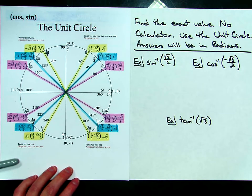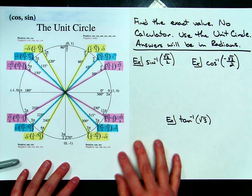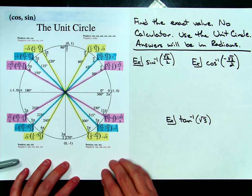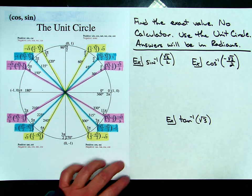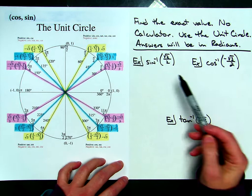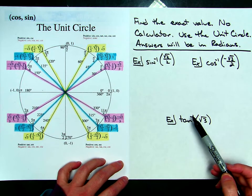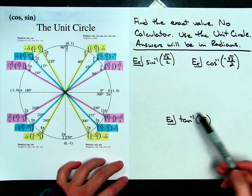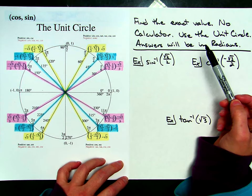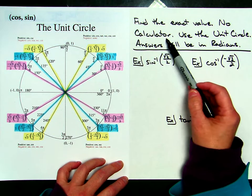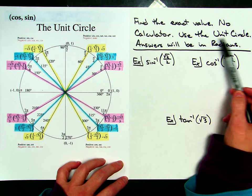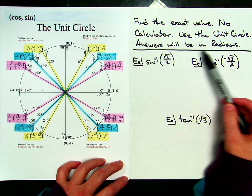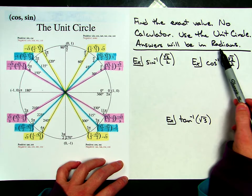I have a unit circle here — it might be a little small, but if you've got your unit circle it's going to be the same. I've got three examples set up that we're going to do. Basically, it wants you to find the exact value. You are not going to be using a calculator — you're going to use your unit circle, and all of your answers will be in radians.